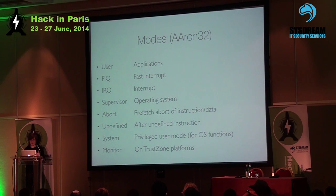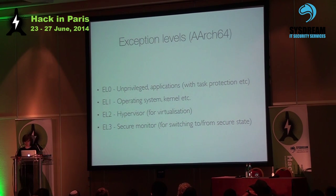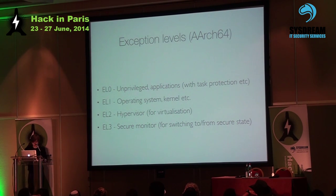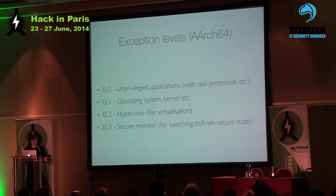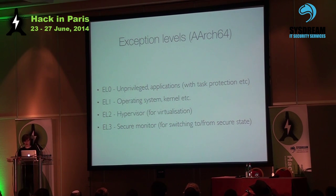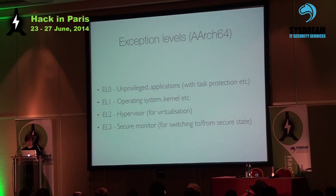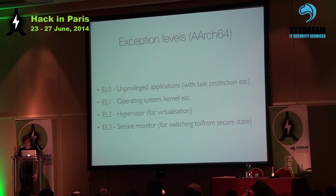They got rid of that and now we only have four exception levels. EL0 is the unprivileged mode where your applications run. EL1 is where your operating system kernel runs. EL2 is where your hypervisor — for example, VMware on the desktop — runs. And then underneath that we have another mode called the secure monitor, which manages the state switch between the normal mode and the so-called secure state.